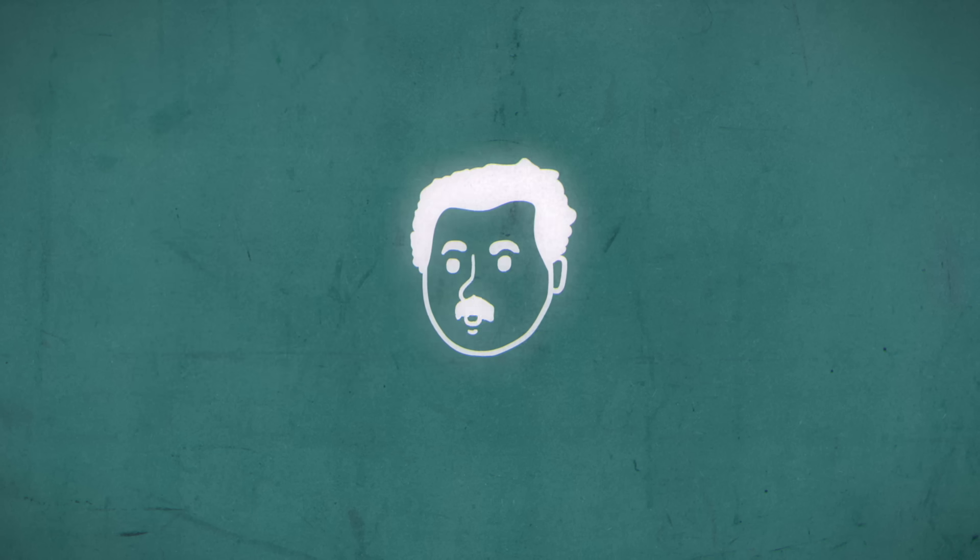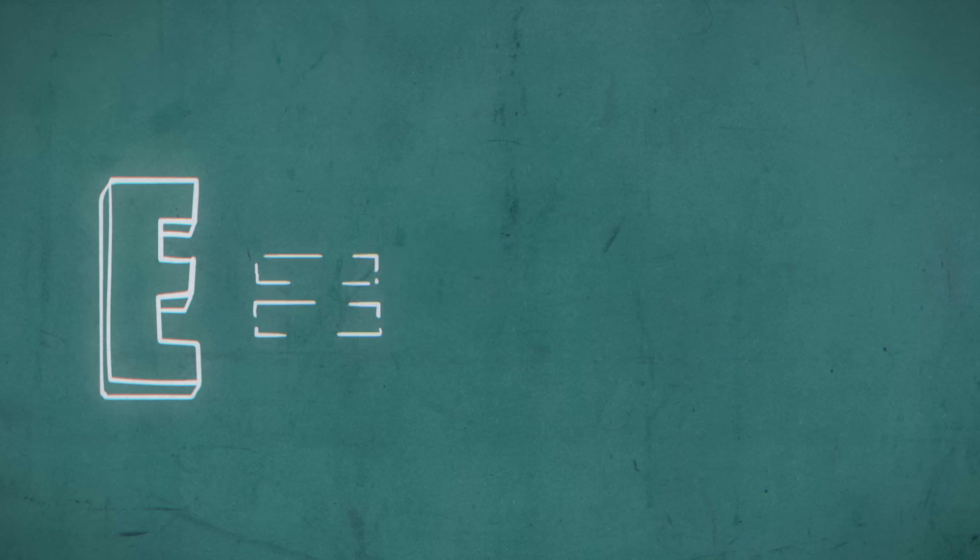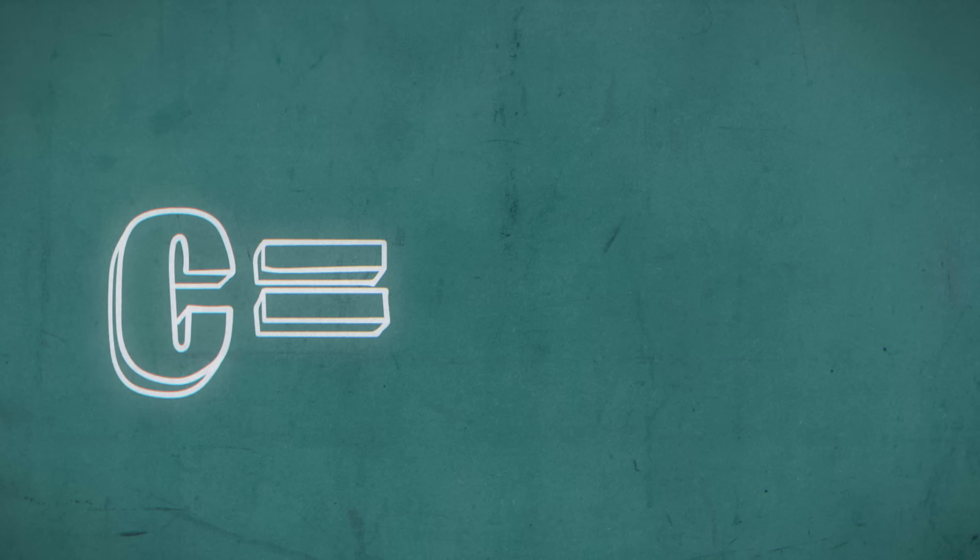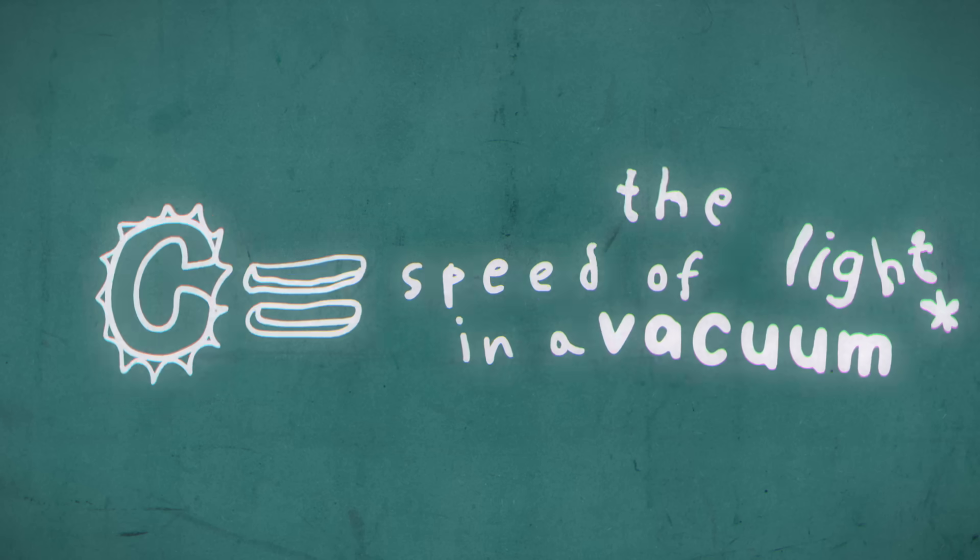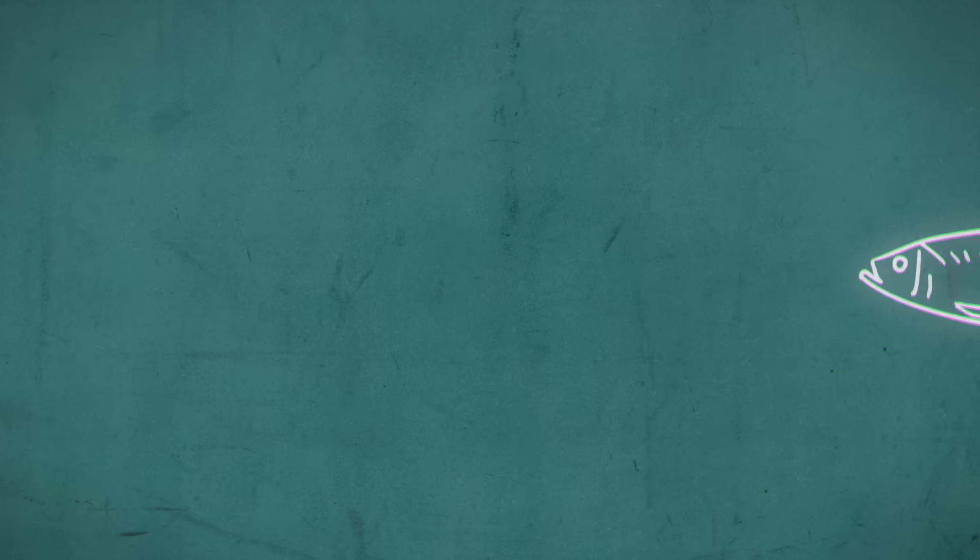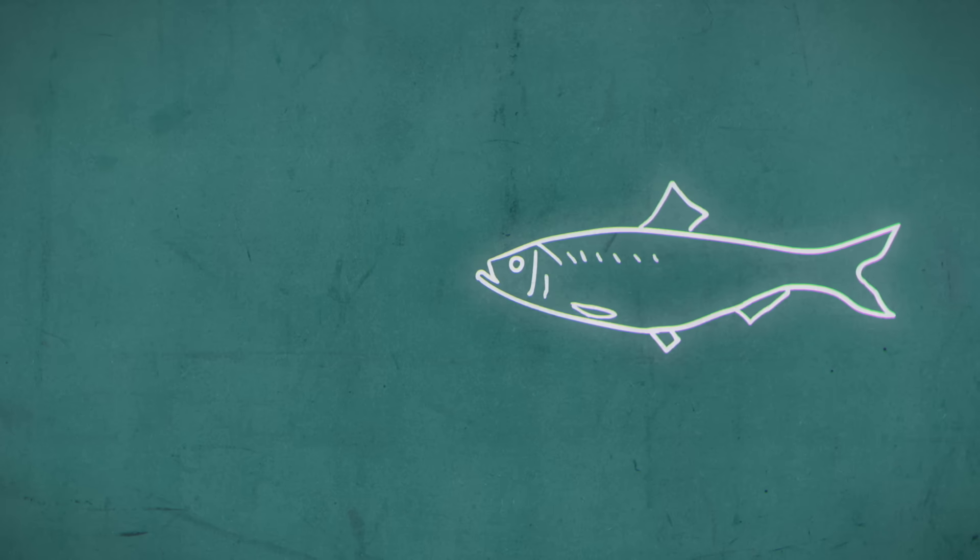This nuance is just one of several hiding in E equals MC squared. For example, the C in Einstein's equation refers specifically to the speed of light in a vacuum, which outer space approximates. But light's speed is actually defined by what it's traveling through.